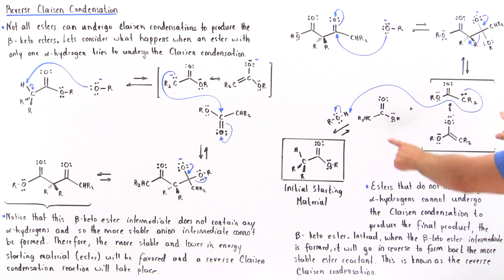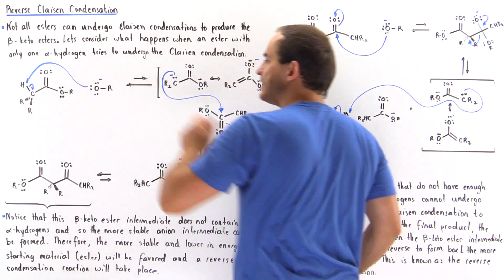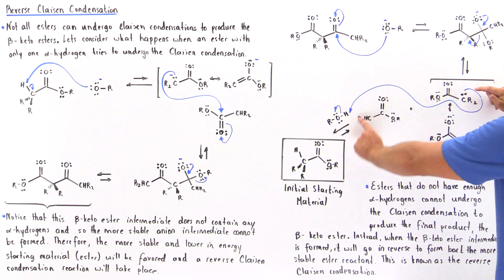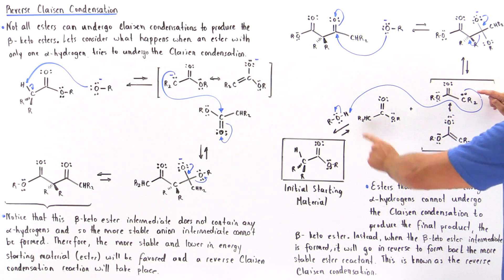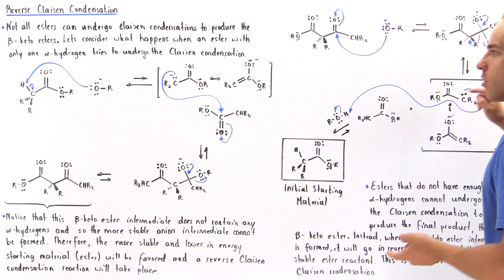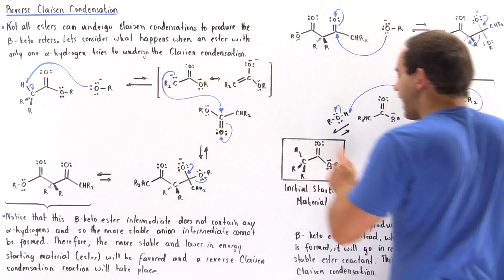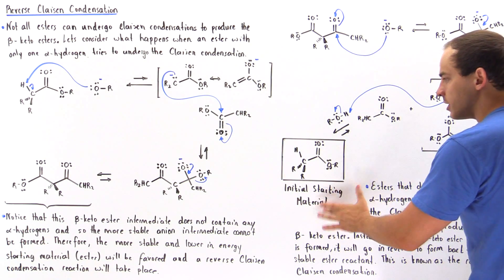In the final step, to go back to our initial starting material, the ester enolate acts as a base, reacting with the alcohol and deprotonating it to form the alkoxide, as well as regenerating the initial starting material ester.